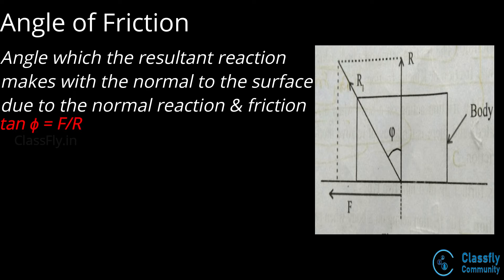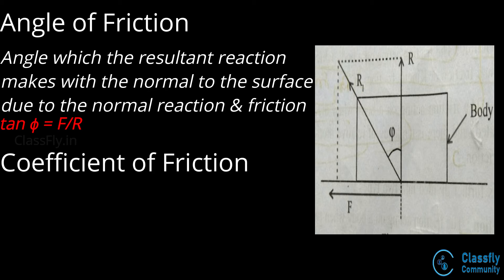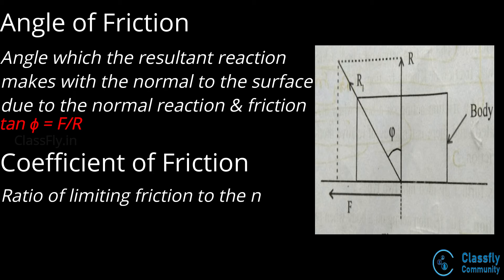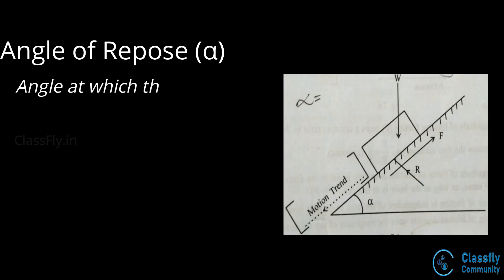Coefficient of friction: it is defined as the ratio of the limiting friction to the normal reaction. Hence μ = F / R. The coefficient of friction is also equal to the tangent of the angle of friction, so this can also be written as tan φ = μ = F / R.